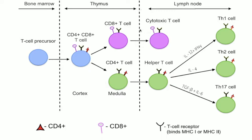CD8+ T-cells, also known as killer cells, are cytotoxic. This means that they are able to directly kill virus-infected cells as well as cancer cells and are also implicated in transplant rejection. These cells are defined by the expression of CD8+ on the cell surface, and they recognize their targets by binding short peptides associated with MHC class I molecules present on the surface of all nucleated cells.